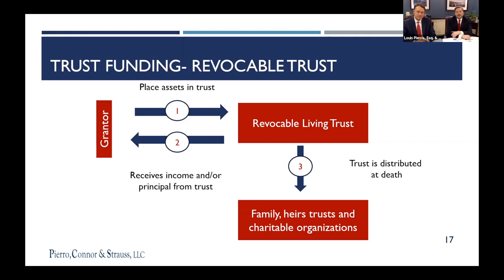It's an avoidable situation because you can do everything through a trust that you could have done through a will, and you would not have that situation. You don't need a waiver for a trust. The next trustee in line steps up. We give them a new certification of trust and they're in control immediately. In the probate situation, it's very different.